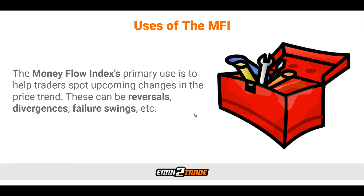We can think of the Money Flow Index as something used to help traders better identify the enthusiasm in the market, or to provide an exact representation of the sentiment that dominates a particular asset class in any given moment. Simply put, the MFI is used to find out how and how much of a given instrument was traded. It paints buying and selling pressure as a simple numerical value that is easy and quick to comprehend. The Money Flow's primary use is to help traders spot upcoming changes in the price trend — reversals, divergences, failure swings. By getting an exact representation of price and volume data, traders can better plan their further moves.